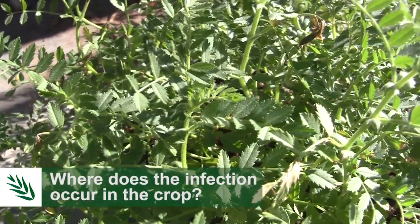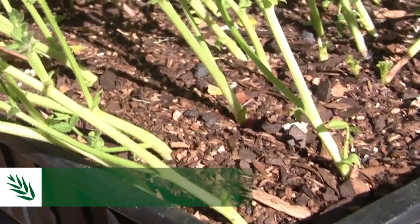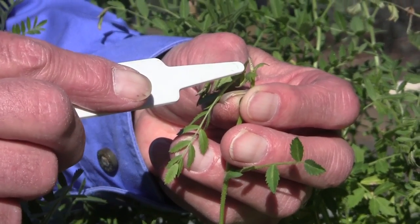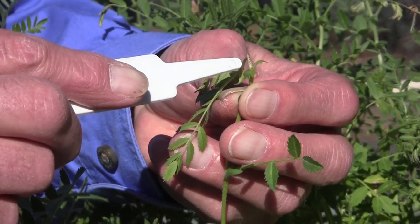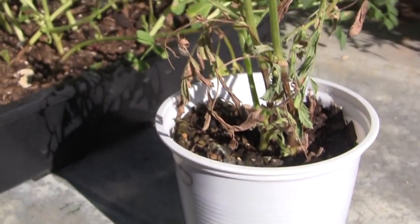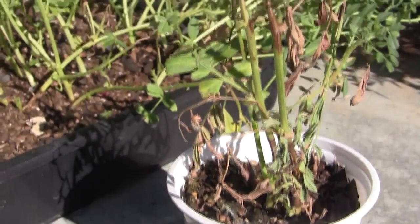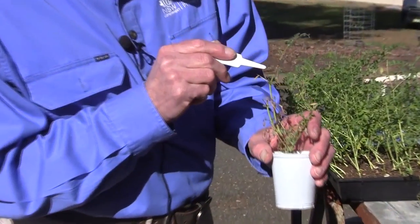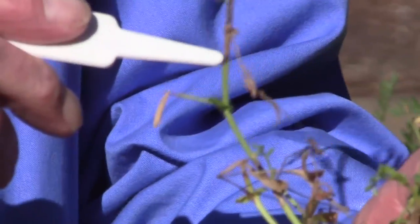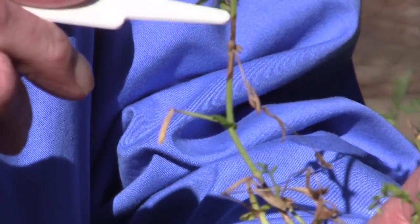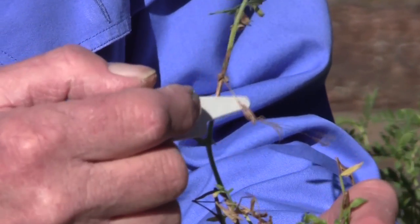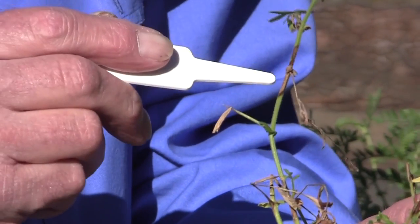The Ascochyta fungus can infect any part of the plant except the root system. It usually invades on the stem where the leaf joins the stem, as you can see on this plant here. That's the part that stays wettest for longest after a rainfall event — the leaf axil. That's where the water collects, and that's where the lesion started. You can see here the fungus has caused a stem lesion.